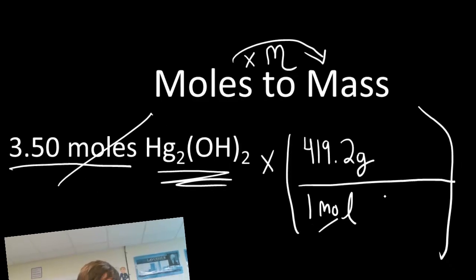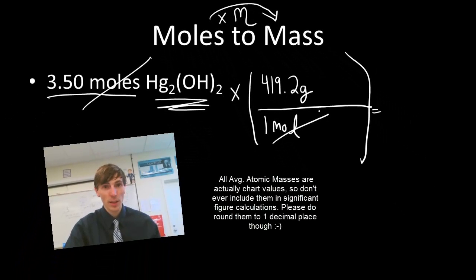So I multiply. My moles cancel. I multiply 3.5 times 419.2. This number here, 419.2, we're just going to... That's 4 sig figs. And I have my measured value here, 3.5. So we're going to round to 3 sig figs.